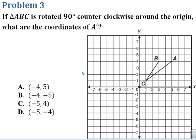In problem 3, we have if triangle ABC is rotated 90 degrees counter-clockwise around the origin, we want to know what are the coordinates of A prime. So A after that image. I have point A here. It looks like at 5, 4.